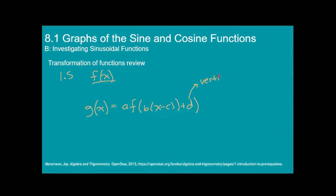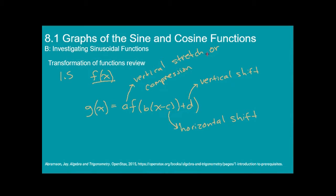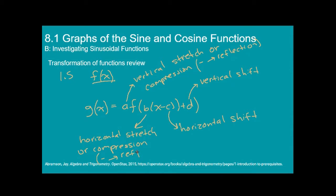Remember: d is a vertical shift, c is a horizontal shift, and a is a vertical stretch or compression depending on the value. If a is negative, it causes a vertical reflection over the x-axis. Then b is the horizontal stretch or compression, and if b is negative it causes a reflection across the y-axis.